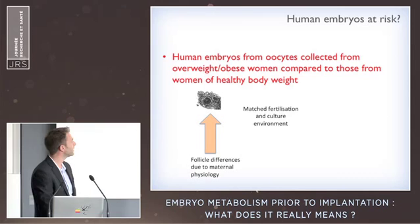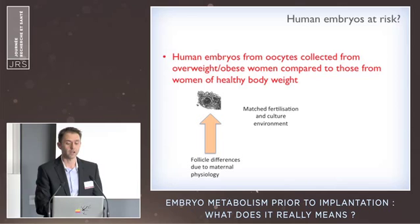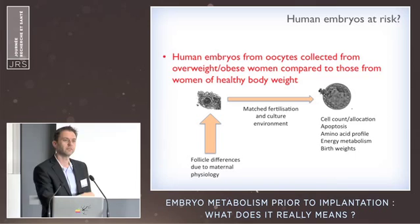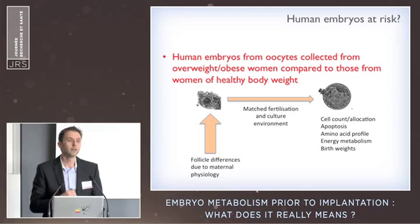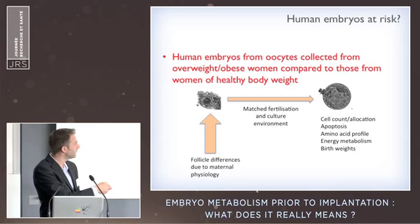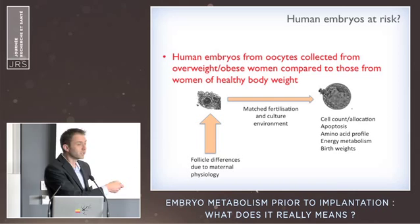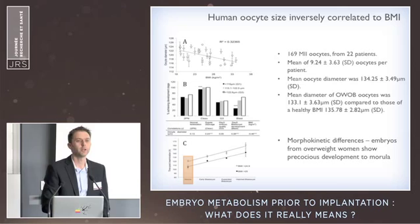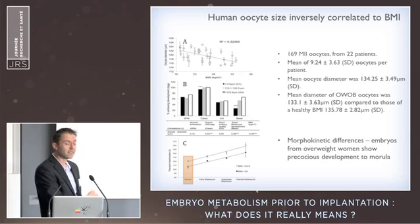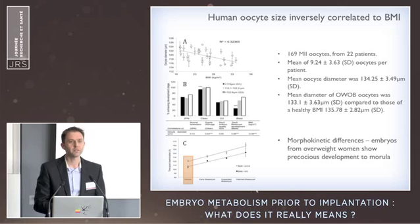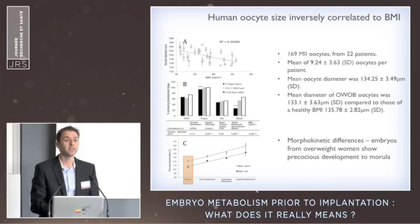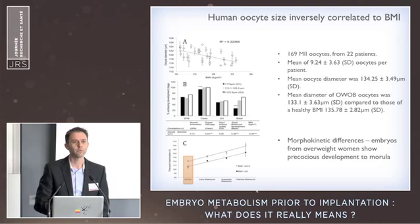We've recently published a study looking at the effect of being overweight and obese on embryo physiology. The model is similar — the differences observed come from the egg. Oocytes were collected from women who are overweight and obese or of healthy body weight; fertilization and culture environment were not different. We observed that oocytes from overweight and obese ladies are smaller, and smaller oocytes are significantly less likely to form a blastocyst. When we compared morphokinetics, embryos from overweight and obese ladies developed faster — reaching the morula stage on average 17 hours sooner than embryos from normal healthy weight women.